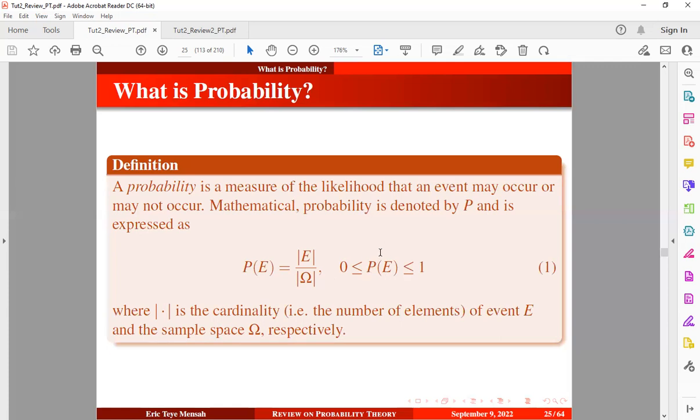The probability of any event will always lie between the interval of zero and one. The closer the probability is to zero, the less likely the event will occur, and the closer the probability is to one, the more likely the event will occur.